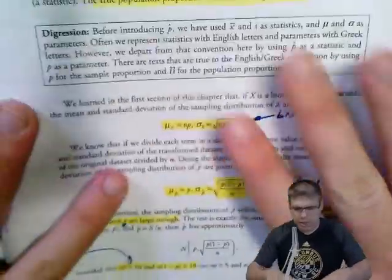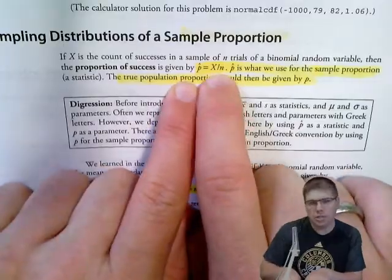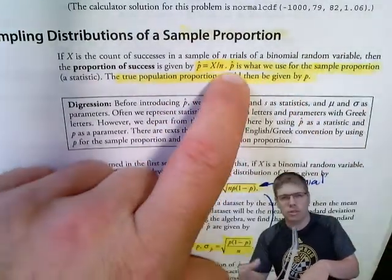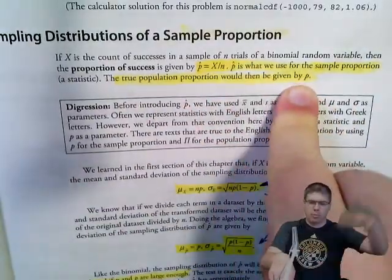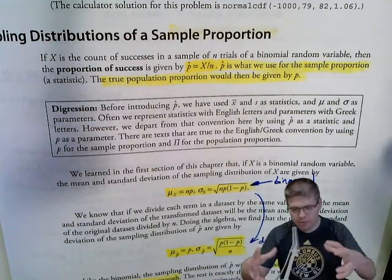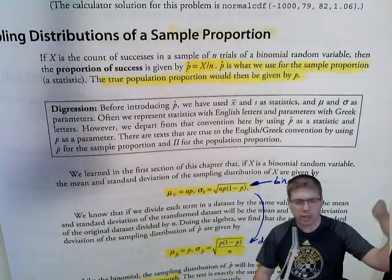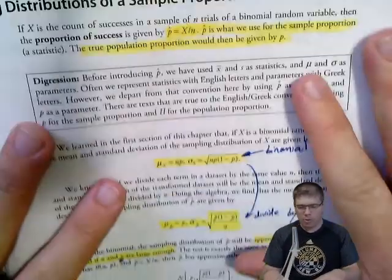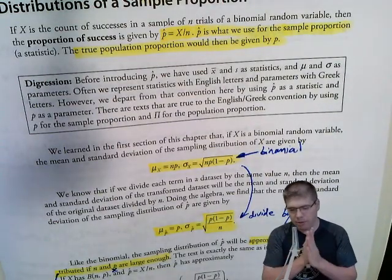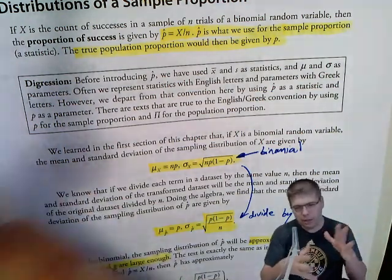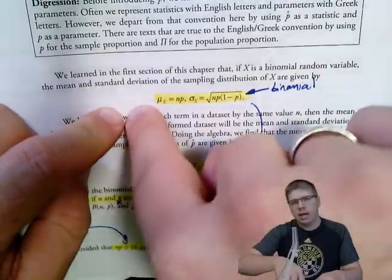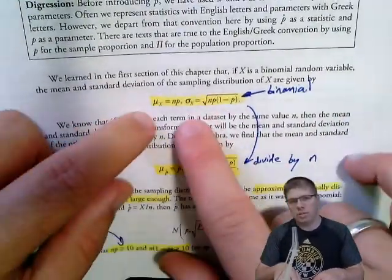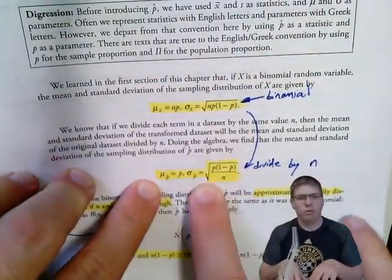Moving to proportions — this is on the back of our formula sheet. A sample proportion P-hat is the number of successes out of the sample size n. The true population proportion is P. Our observed sample proportion won't always match P exactly — there's variability. This is directly related to the binomial distribution: if you divide the number of successes by n, you get a proportion. That's where the formulas on the formula sheet come from.